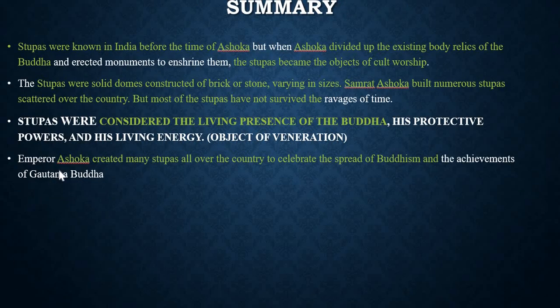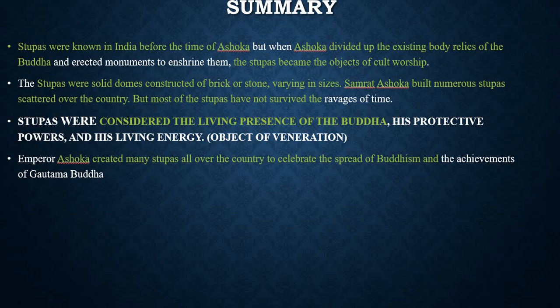Summary: Stupas were known in India before ancient times — even before Ashoka — but Buddhism was the religion that popularized Stupas. Stupas were solid domes constructed of bricks or stone, varying in size. Samrat Ashoka built numerous Stupas scattered over the country, but most have not survived. Stupas were considered the living presence of the Buddha — his protective powers and living energy — and were objects of veneration. Emperor Ashoka created many Stupas all over the country to celebrate the spread of Buddhism and the achievements of Gautam Buddha. I hope this lecture helps you. Thank you for watching — please subscribe and press the bell icon for the latest updates.